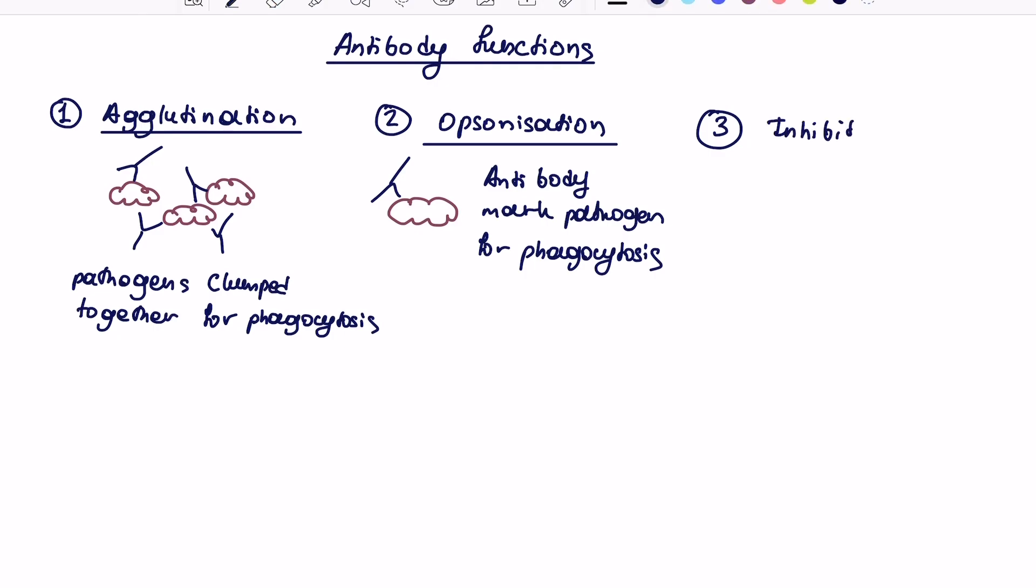We get to the function number three, which I call inhibition of binding to a receptor. So some pathogens, such as virus, they need to bind to a cellular receptor to be able to infect our cells. So if I just draw a eukaryotic body cell with a receptor on top, that receptor would normally be complementary to a certain virus, for example, or even a toxin.